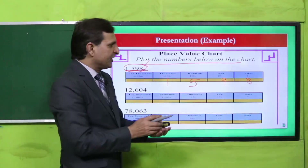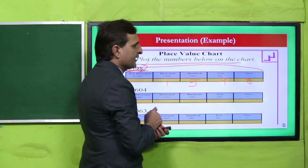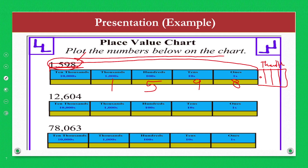तो यह part whole number part कहलाता है। अगर यहाँ dot लगाकर इस side की तरफ numbers को ले जाएं, तो इस side पर 10ths आ जाएगा, फिर hundredths, और फिर thousandths. इस example में इन numbers को place value chart के अंदर add करना है या write करना है।